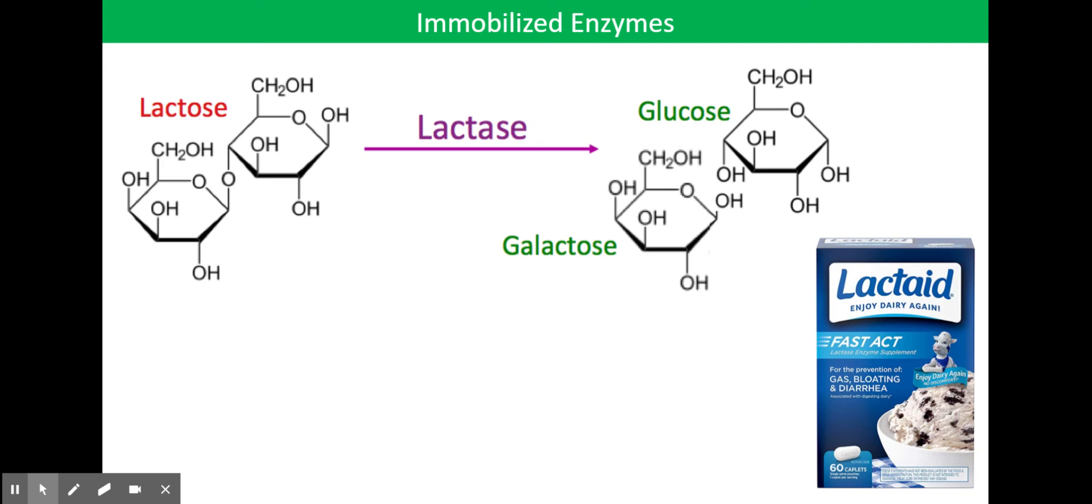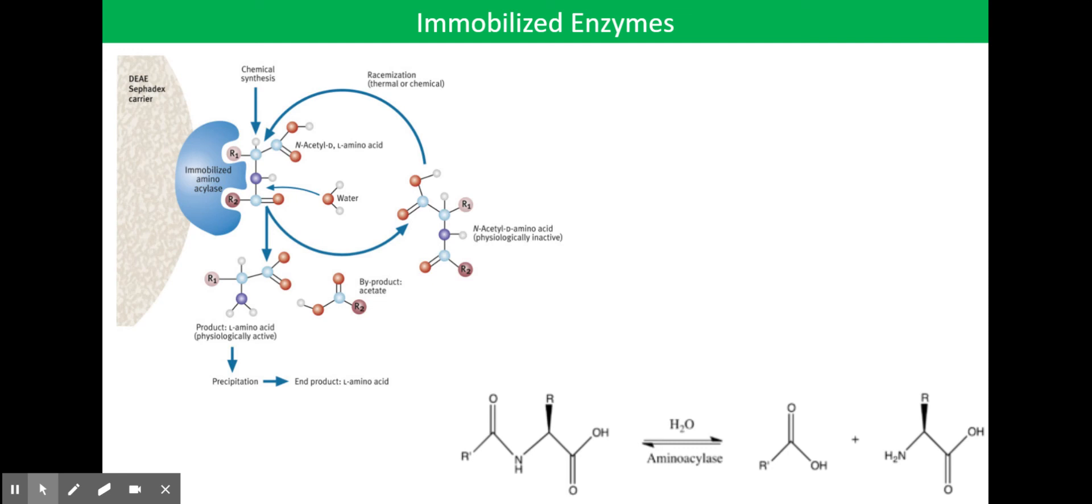Next, we have aminoacylase. Aminoacylase is used to produce pure samples of L-amino acids by removing the acyl group from the nitrogen of an N-acyl amino acid.